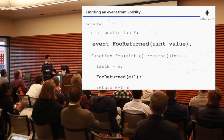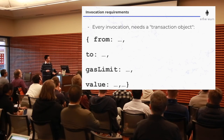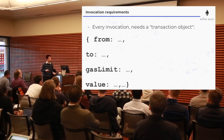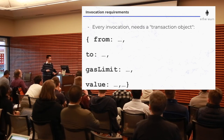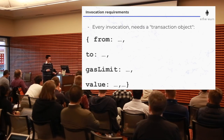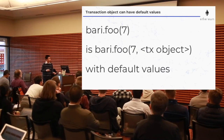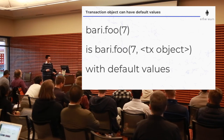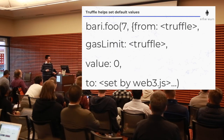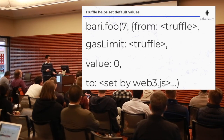Every invocation when calling a smart contract needs a transaction object. In JSON terms it looks like this — four properties: from, to, gas limit, value. Transaction objects can have default values, and when you called barry.foo(7), it was using a transaction object with default values. Truffle, the console we were using, helped set up some default values.